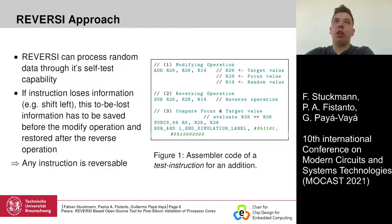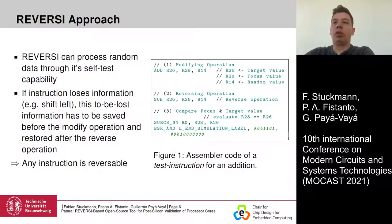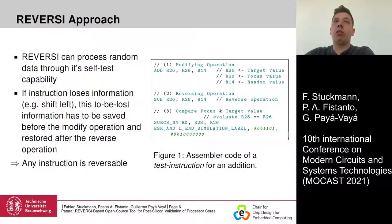The reversi approach can be used on random data because the processor validates itself. If, for example, an instruction loses information — such as in a shift left operation — the information to be lost has to be saved before the modification, and after the reversing operation it has to be restored. Therefore, any instruction can be reversed.